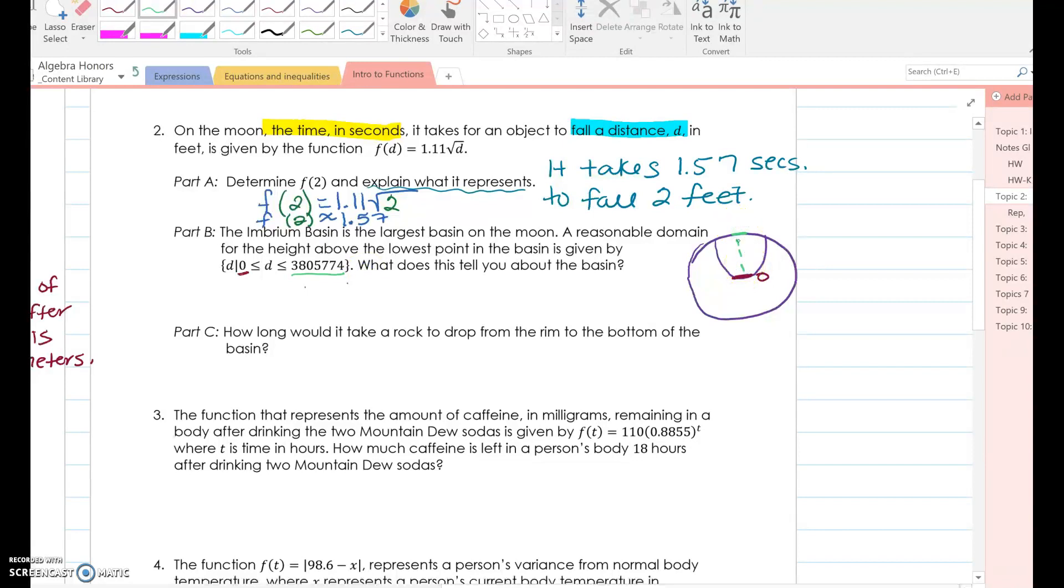How do you read that number? I know you guys got this far. You can totally do that. So three, comma, comma. So that basin, 3,805,774. Good gracious. That's crazy. So what is the lowest point, the height above the lowest point? So we go from zero to 3,805,000. So what does this tell you about the basin? Well, I'm looking at my diagram and it's telling me how deep that basin is. So how deep is the basin? Well, the basin is 3,805,774. This is feet, right? Let me look back. Distance in feet. Yes. Feet deep. That's crazy.